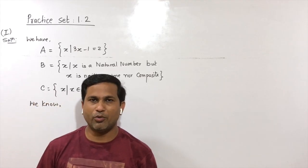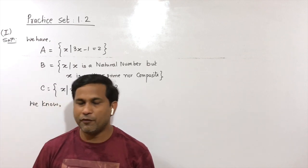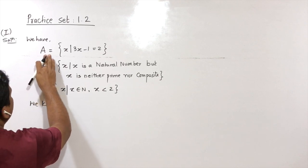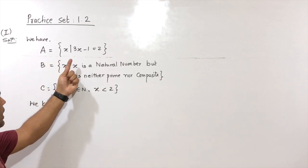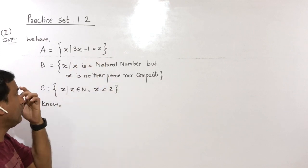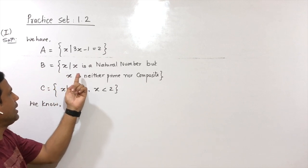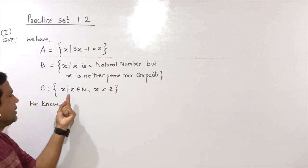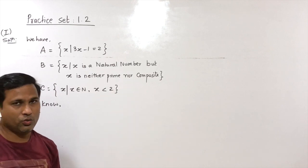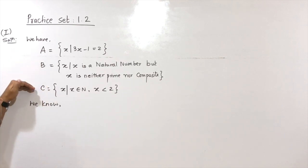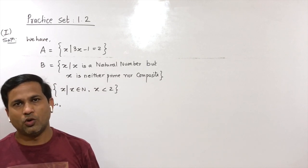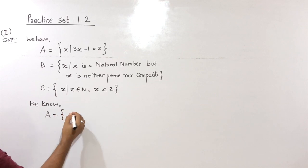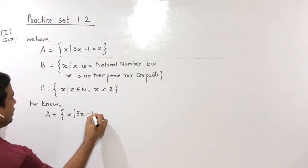Let's start with practice set 1.2. Question number 1: decide which of the following are equal sets and which are not, and justify your answer. We have A equal to {X such that 3X − 1 = 2}, B equal to {X such that X is a natural number but X is neither prime nor composite}, and C equal to {X such that X belongs to natural numbers and X is less than 2}. These sets are given in set builder form, so first we will write them in listing method.